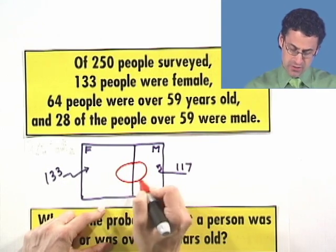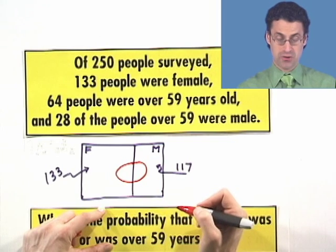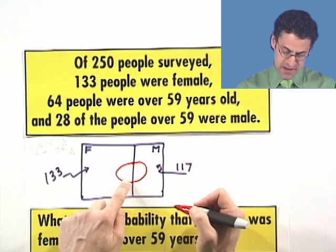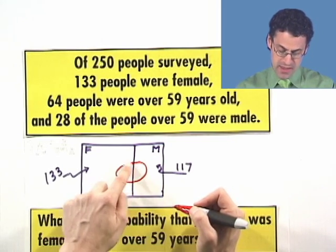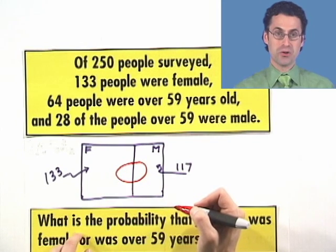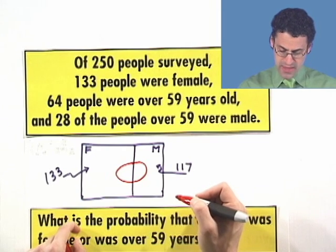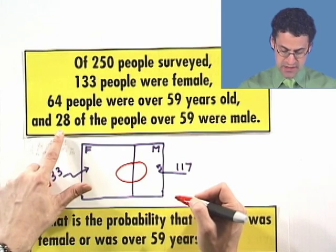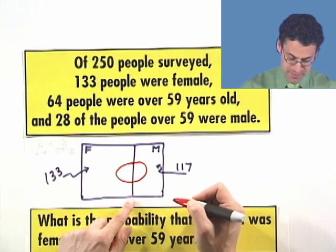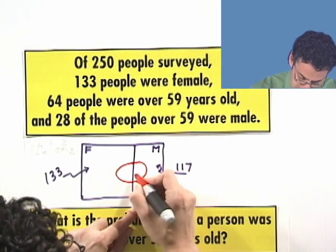Inside the circle are all the over 59-year-olds, and on this side are the 59-year-old females, and on this side are the 59-year-old males. And what do we know? We know that 28 of the 59-year-olds were males. That means that right in this region right here, we have 28.